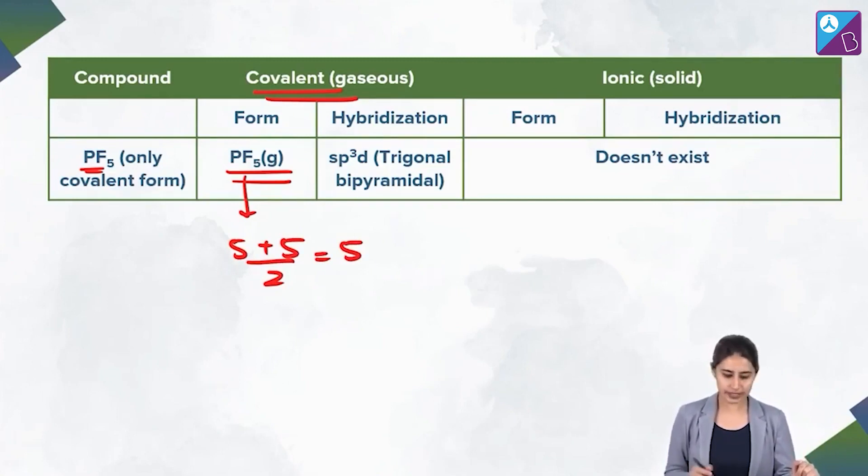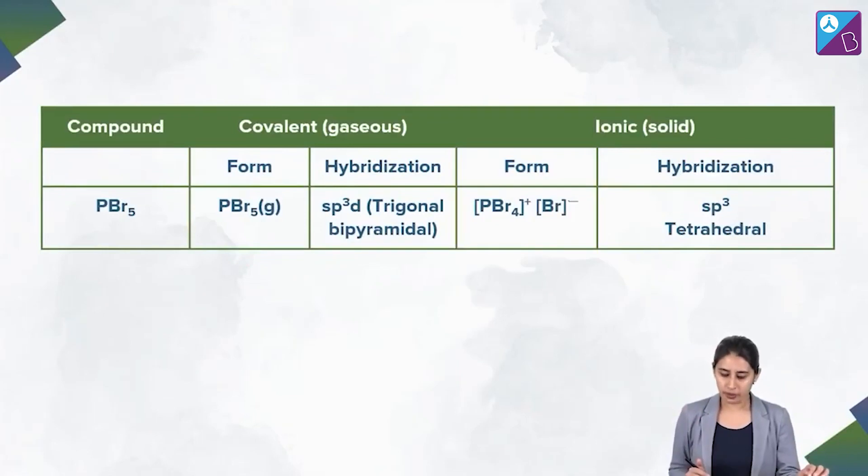PF5 is sorted. What about PCl5? We have just done it. It exists as covalent as well as ionic. So if nothing mentioned we write TBP, but specifically if it is mentioned that we are talking about ionic state, write down properly, okay?